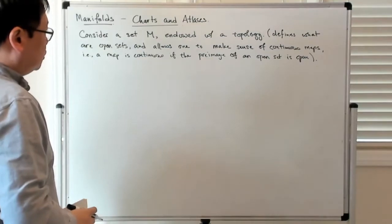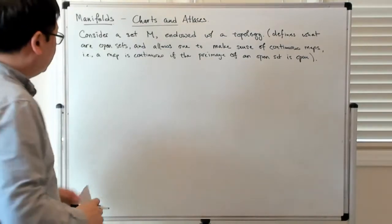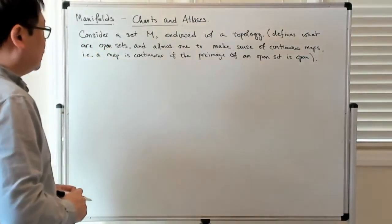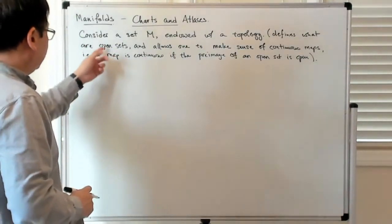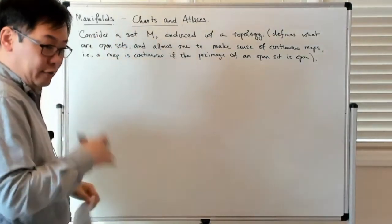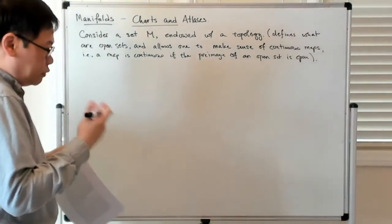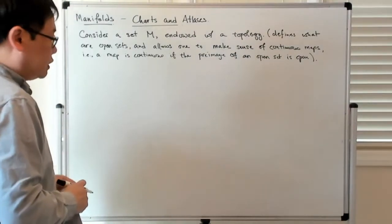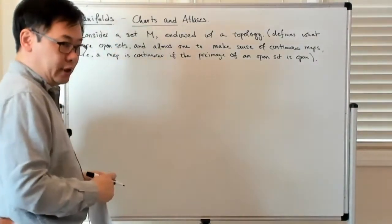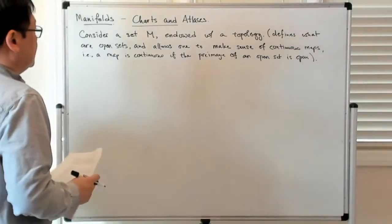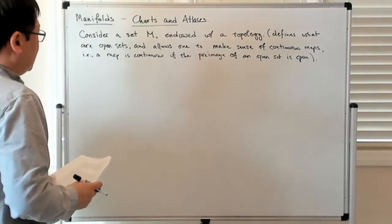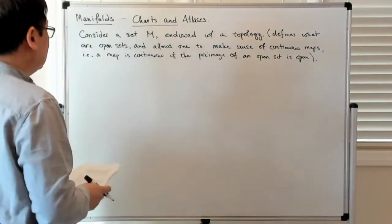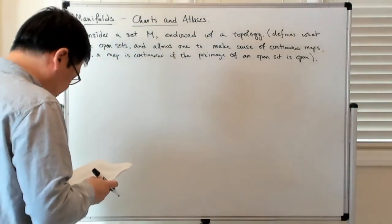I won't go too much into the notion of sigma algebras — where sets have certain properties to do with unions and intersections, closed under some appropriate combination of unions and intersections. So you have a set M, there's a topology, and the topology allows you to make sense of the idea of continuous maps.